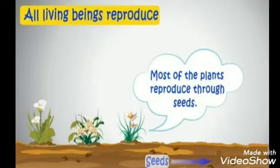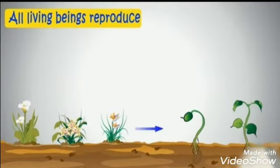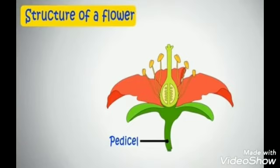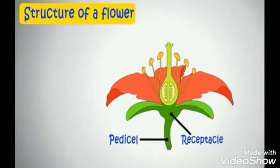Firstly, let's learn the structure of a flower. This is the pedicel, which is the green colored stalk. Then the bottom part is the receptacle, and all the other parts of the flower are arranged in four whorls.